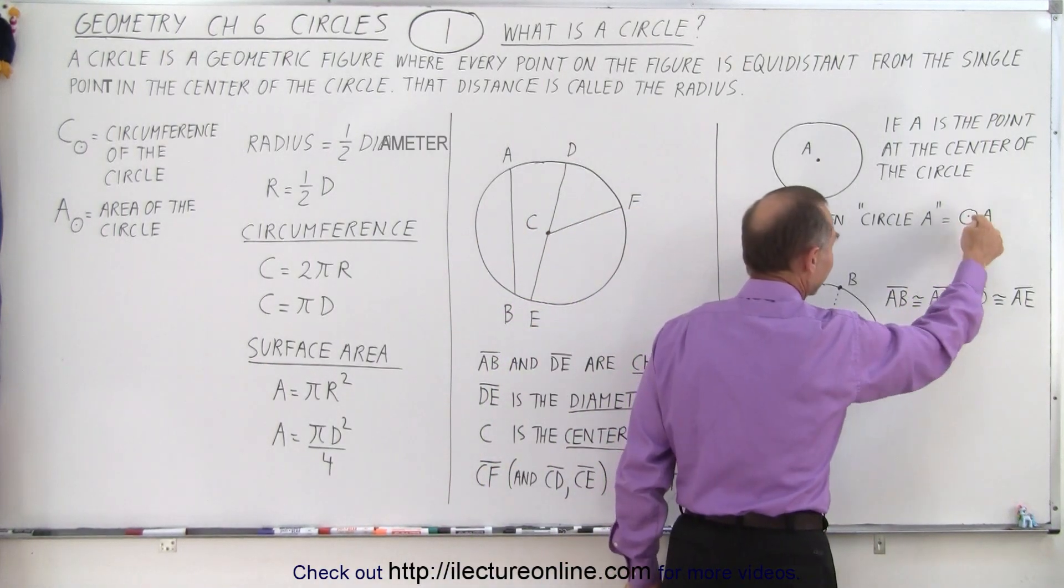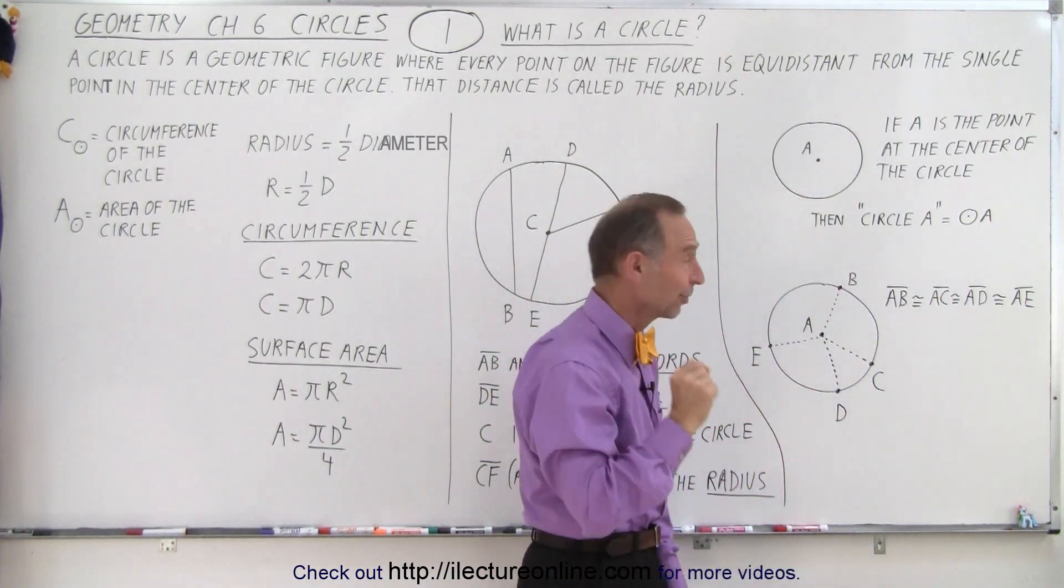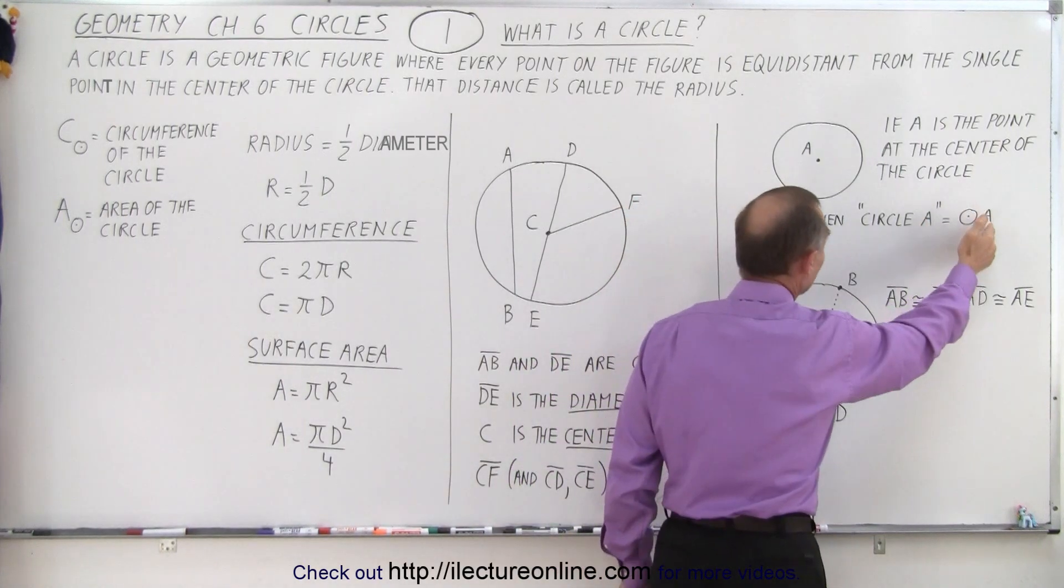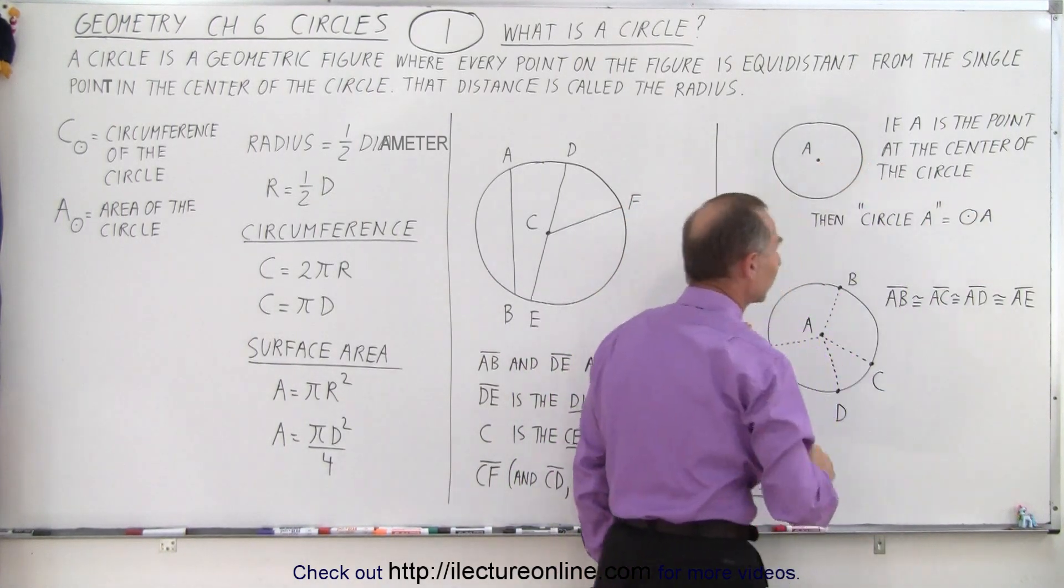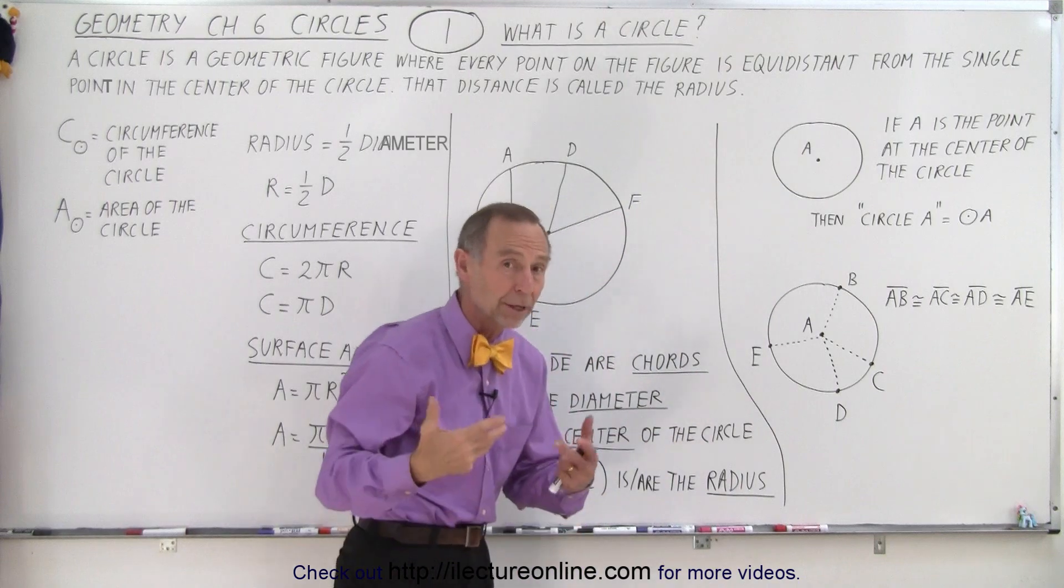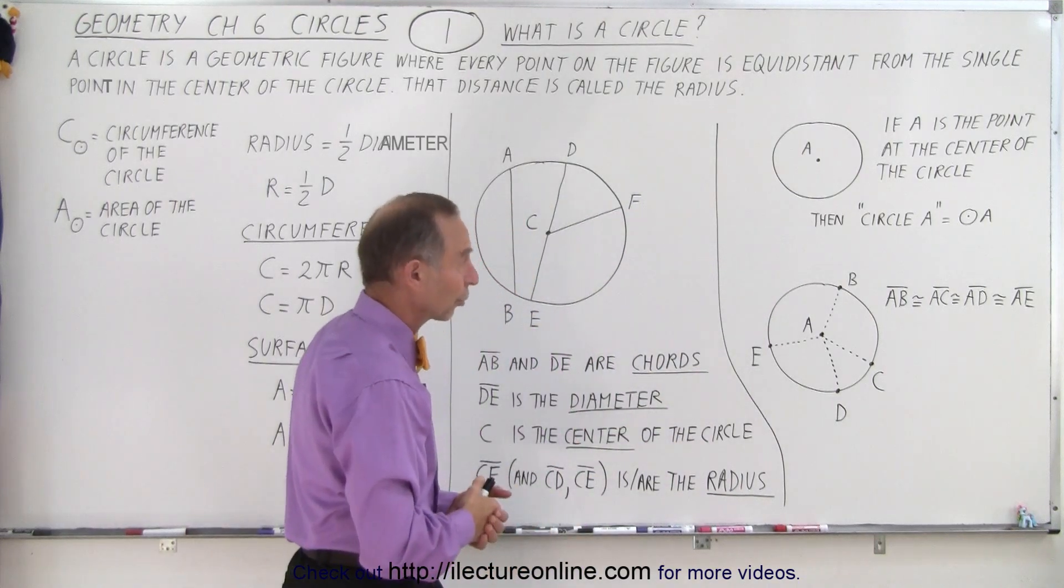We draw a little circle symbol. Notice we have a little dot in the center representing the center of the circle, and then the letter A, which represents the point at the center. So there's different ways in which we can represent the circle.